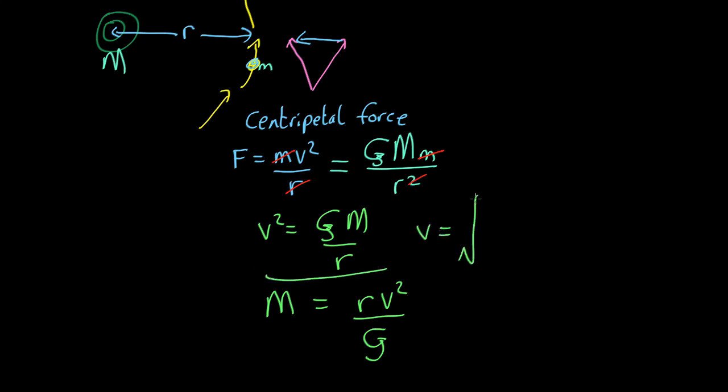So v equals root GM over r. What that indicates is if there's a mass somewhere and things are moving in circles, the bigger the mass the faster it goes. But also as r gets larger the velocity should go down.